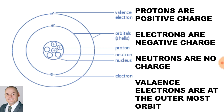Looking at an atom which consists of a nucleus surrounded by electrons. Now inside the nucleus we have positively charged protons and neutrons with no charge. Electrons have a negative charge and valence electrons are found in the outermost orbit.